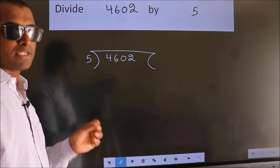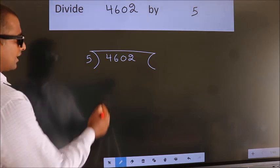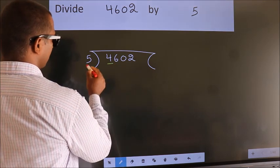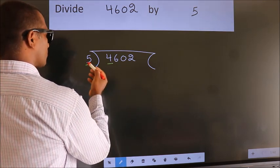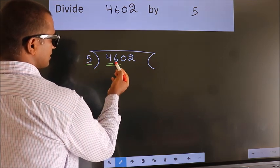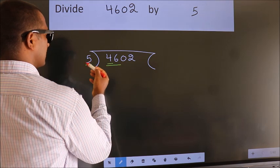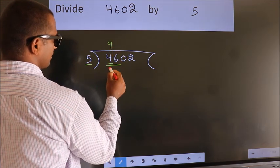This is your step 1. Next, here we have 4, here 5. 4 smaller than 5, so we should take 2 numbers: 46. A number close to 46 in 5 table is 5 nines 45.